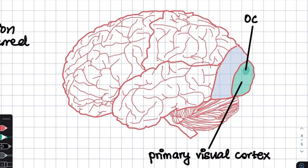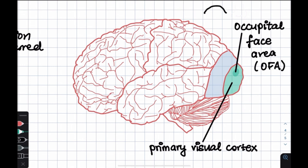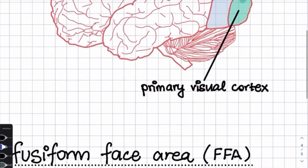Within the primary visual cortex, there is a specialized region called the occipital face area. This is involved in early face processing and helps detect and extract facial features like your nose.